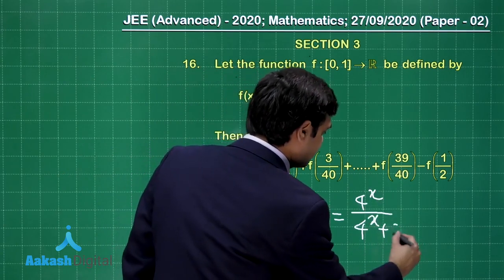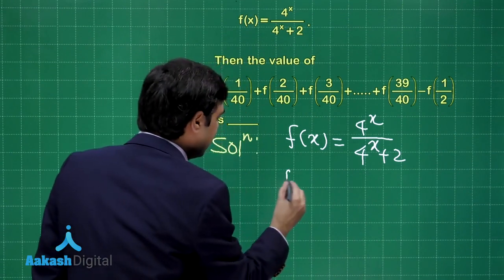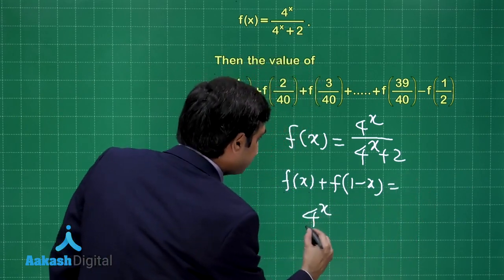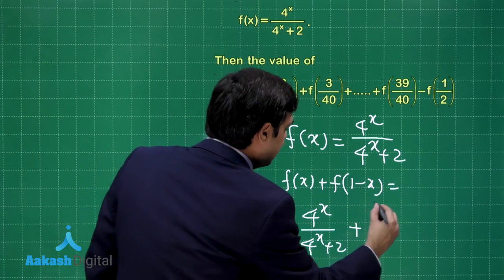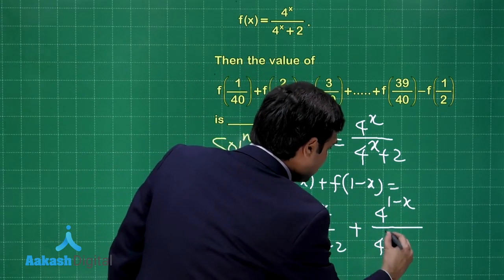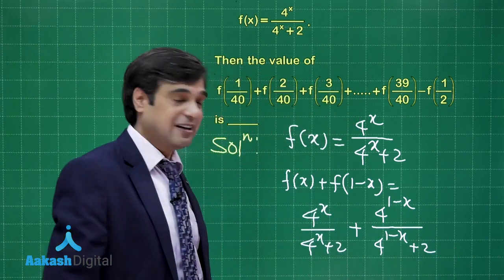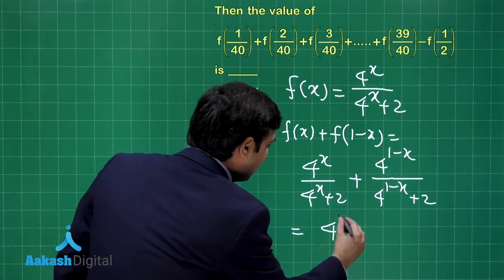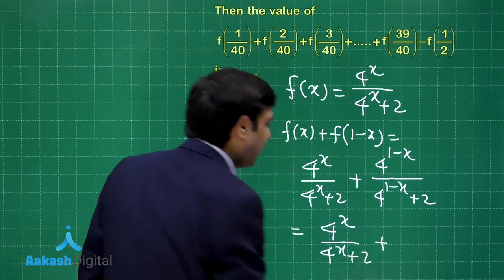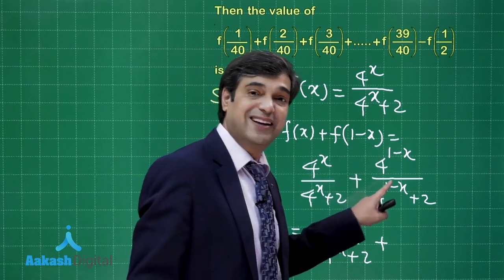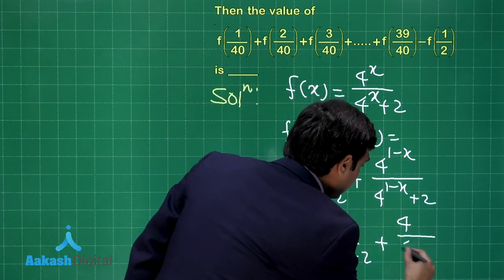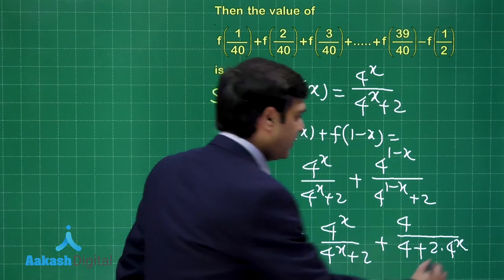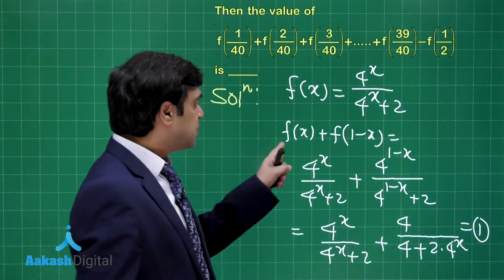Now, f(x) = 4^x / (4^x + 2), so f(x) + f(1−x) = 4^x/(4^x+2) + 4^(1−x)/(4^(1−x)+2). This is the key approach. Simplifying: the 4^x goes to the denominator; taking LCM gives 4/(4 + 2·4^x); taking 2 common from denominator and simplifying gives the result: f(x) + f(1−x) = 1.